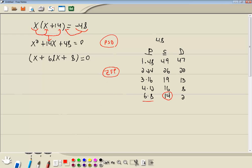Zero factor property. It says you get zero on one side, you factor the other side, you set each factor equal to zero. So I'll set x plus 6 equal to zero, and I'll set x plus 8 equal to zero.